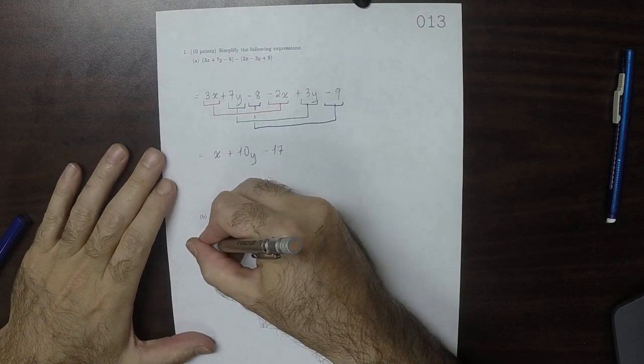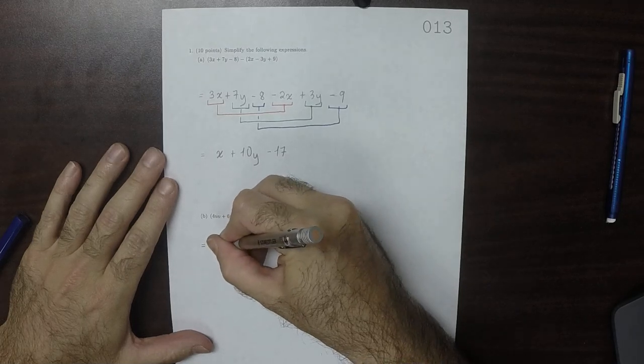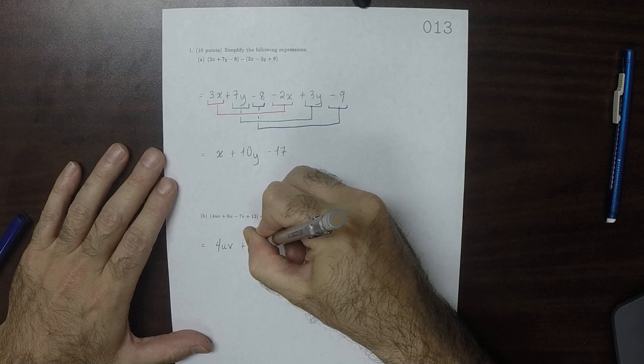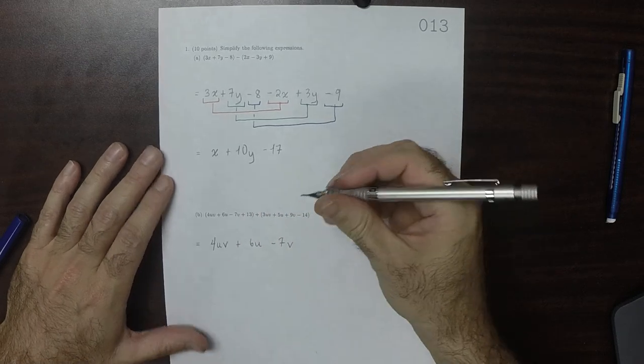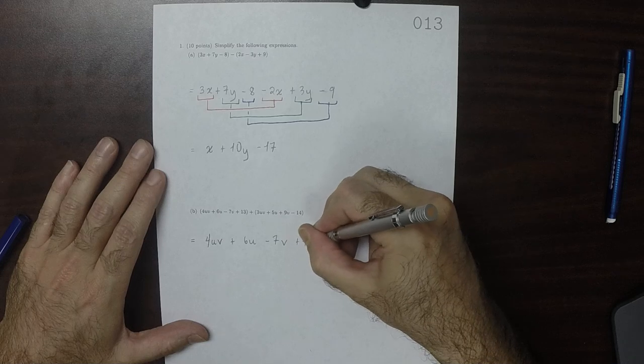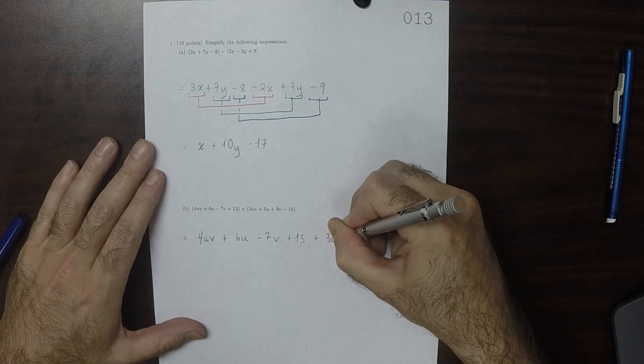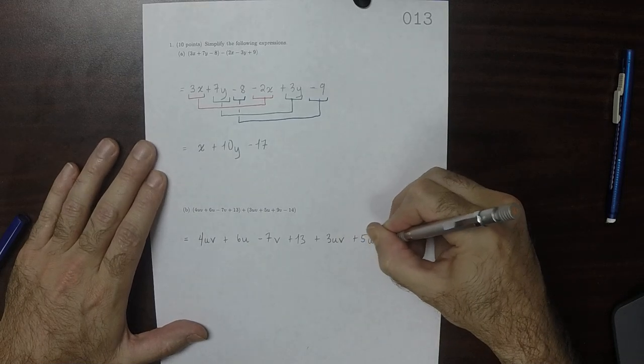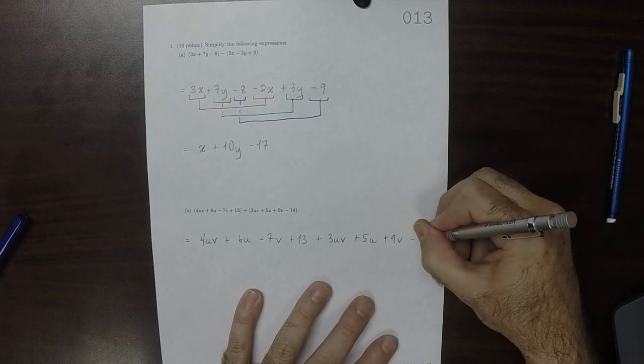OK. Again, for this one, we'll deassociate. That is to say, drop the parentheses. So we have 4uv plus 6u minus 7v plus 13 plus 3uv plus 5u plus 9v minus 14.